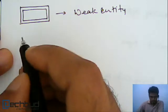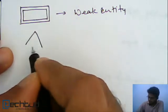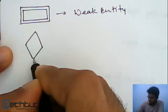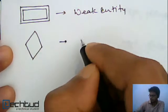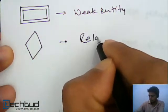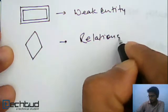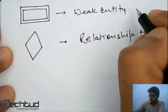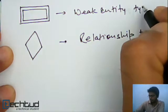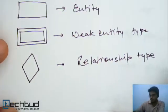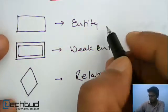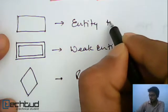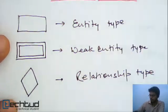Now, the next one we have is a diamond symbol which represents relationship. Relationship type. Well, this is also type. I hope by now you understand what is entity and what is entity type. Okay.